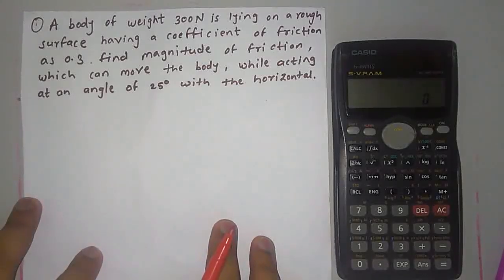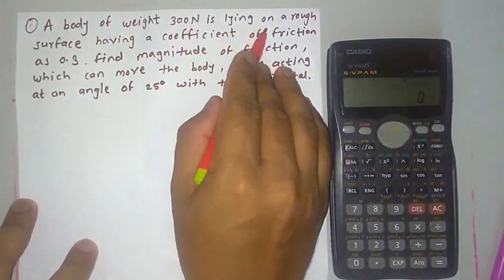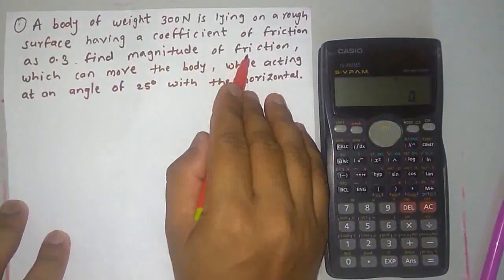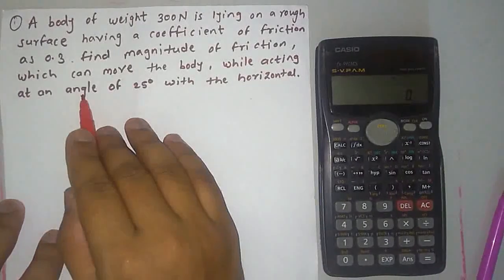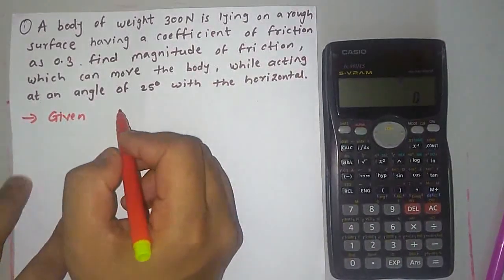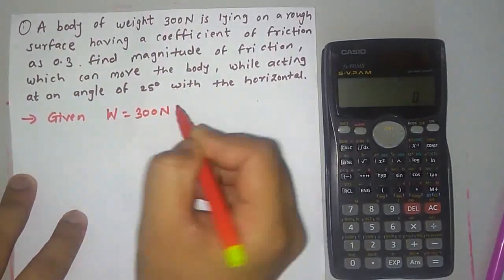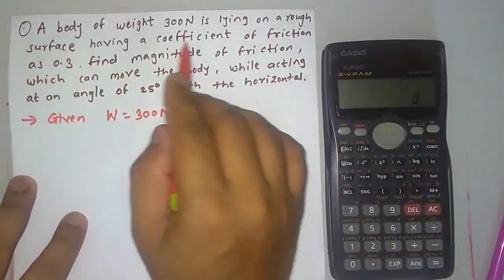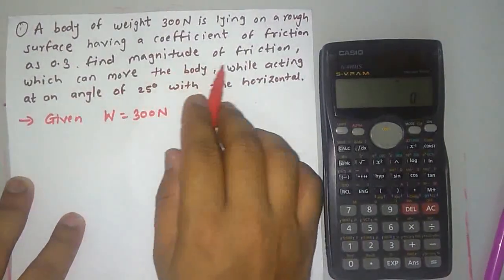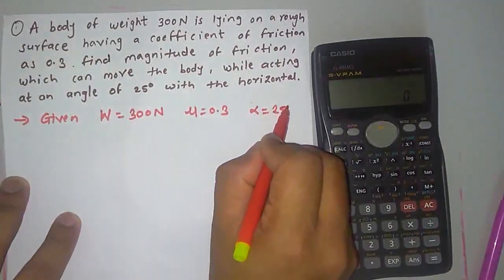Now we will start to solve the problem related to friction. The first problem: a body of weight 300 Newton is lying on a rough surface having a coefficient of friction of 0.3. Find the magnitude of force which can move the body while acting at an angle of 25 degrees with the horizontal. So W is given as 300 Newton, mu is 0.3, and the angle is 25 degrees.